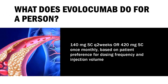Dose — Prevention of cardiovascular events: Indicated to reduce the risk of myocardial infarction, stroke, and coronary revascularization. Administer 140 mg SC every 2 weeks or 420 mg SC once monthly, based on patient preference for dosing frequency and injection volume. When switching dosage regimens, administer the first dose of the new regimen on the next scheduled date of the prior regimen.